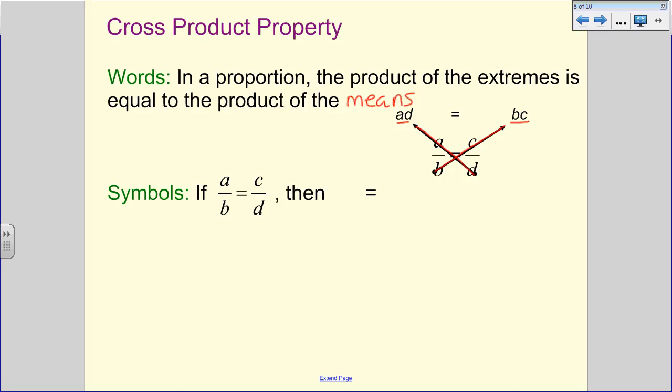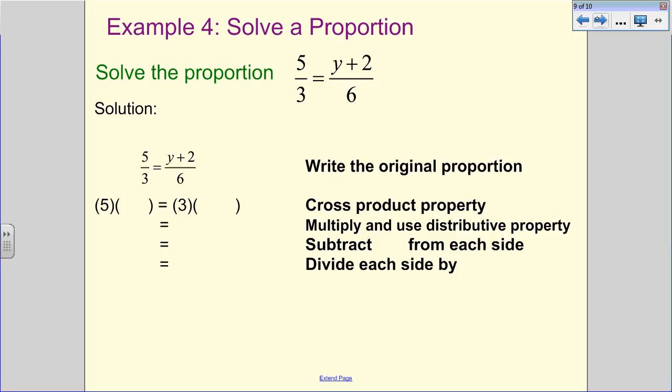And they're equal to each other. So what it would mean in symbols is if you have this proportion, then BC, B times C, is equal to A times D. That's all it is. So let's take a look at our example. So we want to solve this proportion. Well, what's our solution going to look like? Well, we're going to start off by just copying this original proportion down of 5 over 3 is equal to Y plus 2 over 6. When it says solve the proportion, what they're really telling you to do is solve for Y.